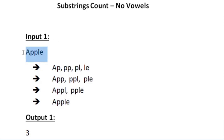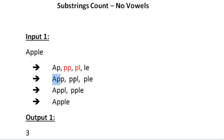Now we have to count the number of substrings which have no vowels in them. Among the length-2 substrings, 'pp' and 'pl' have no vowels. The others — 'ap' and 'le' — contain vowels. Among the length-3 substrings, 'ppl' has no vowels, while 'app' and 'ple' contain vowels. The length-4 and length-5 substrings all contain vowels. So there are only three substrings with no vowels, giving output 3.